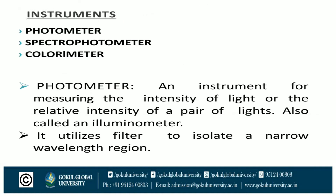Now the instruments: photometer, spectrophotometer, colorimeter. A photometer is an instrument for measuring the intensity of light or the relative intensity of a pair of lights, also called an illuminometer. It utilizes filters to isolate a narrow wavelength region, so a photometer is useful for narrow wavelength regions.